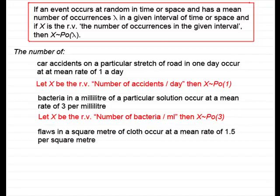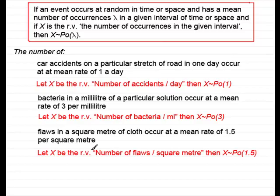One more example: the number of flaws in a square metre of cloth occur at a mean rate of 1.5 per square metre. I gave this example just to show that you don't necessarily have integer values for the mean. We've got 1.5 per square metre. In this example, we've got an interval of space, that being square metre, and the number of flaws occurring at a mean rate of 1.5. So let X be the random variable, number of flaws per square metre. Then X would follow a Poisson distribution of 1.5 per square metre.